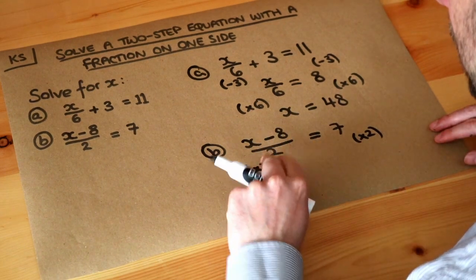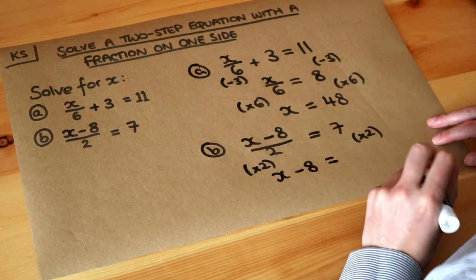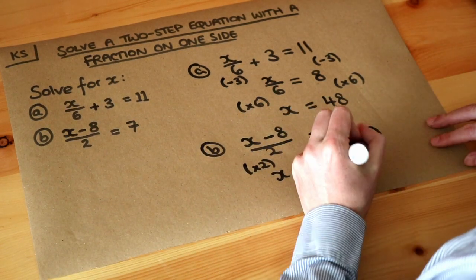Now if we do the left-hand side times by 2, we get rid of that over 2 and we're just left with the x minus 8. If we times the 7 by 2 we get 14.